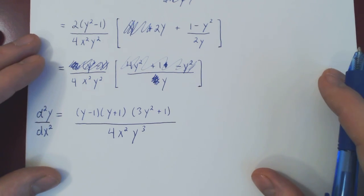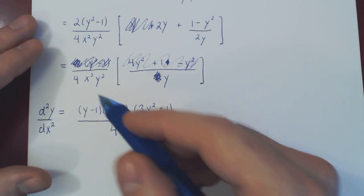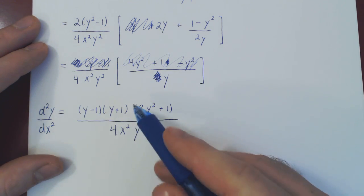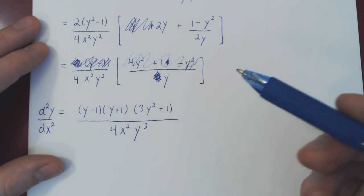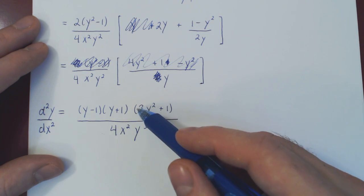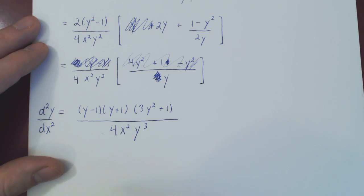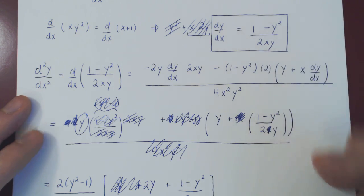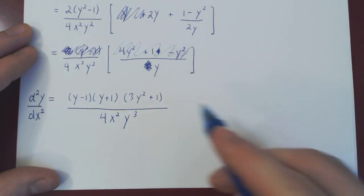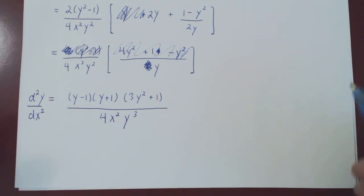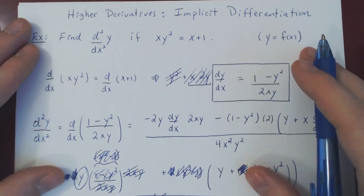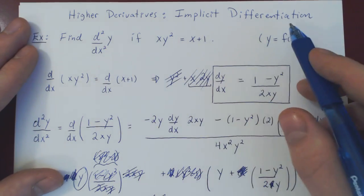And that's it. We could do the same thing for the third derivative: differentiate both sides of the second derivative expression to get the third derivative. When you differentiate, dy/dx will appear again, but you replace it with its expression in x and y, and then algebraically simplify to arrive at a clean third derivative. This is how you do higher derivatives combined with implicit differentiation.